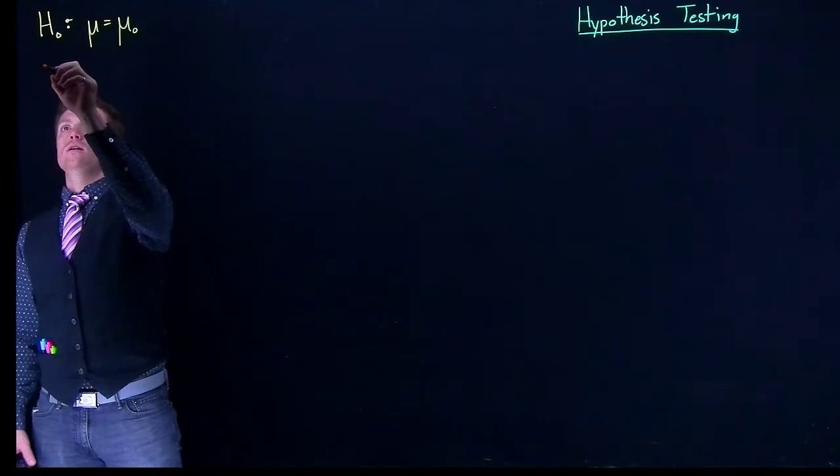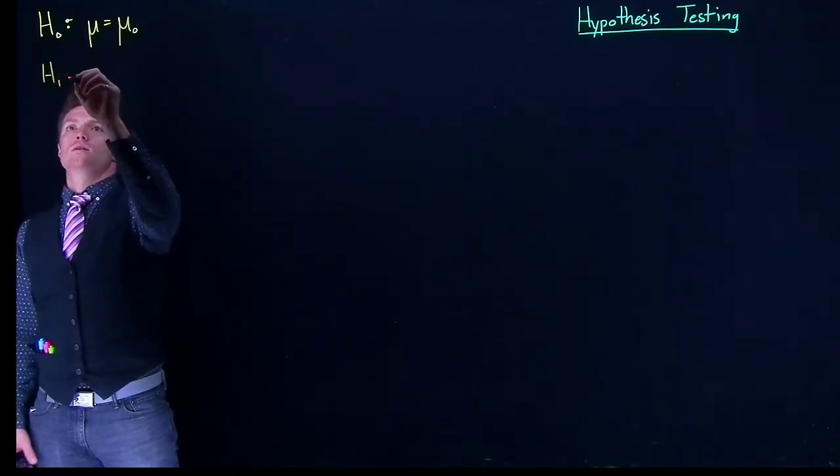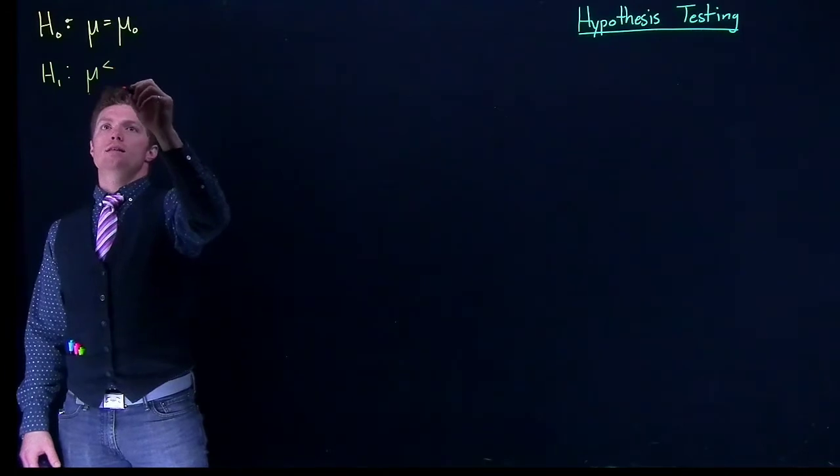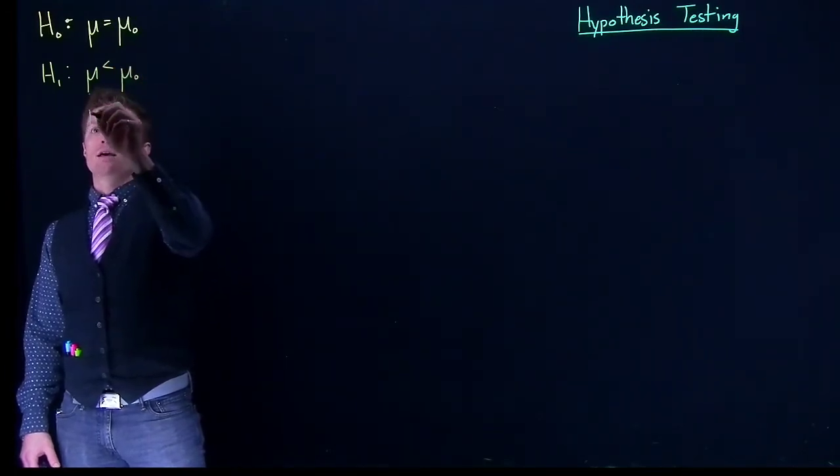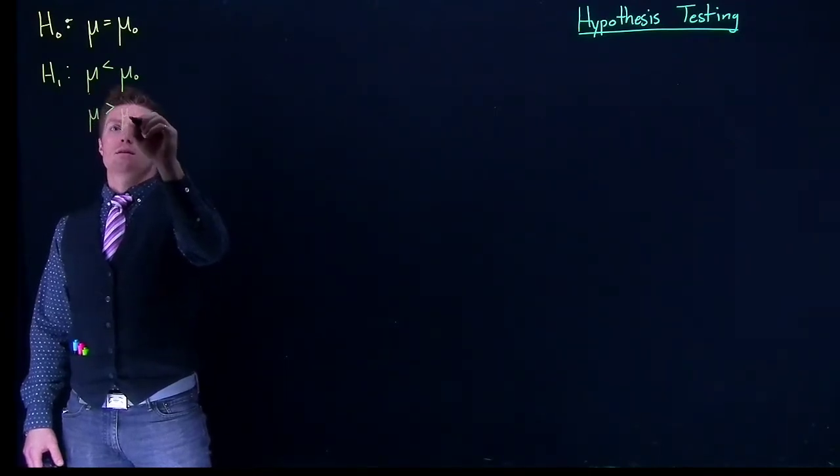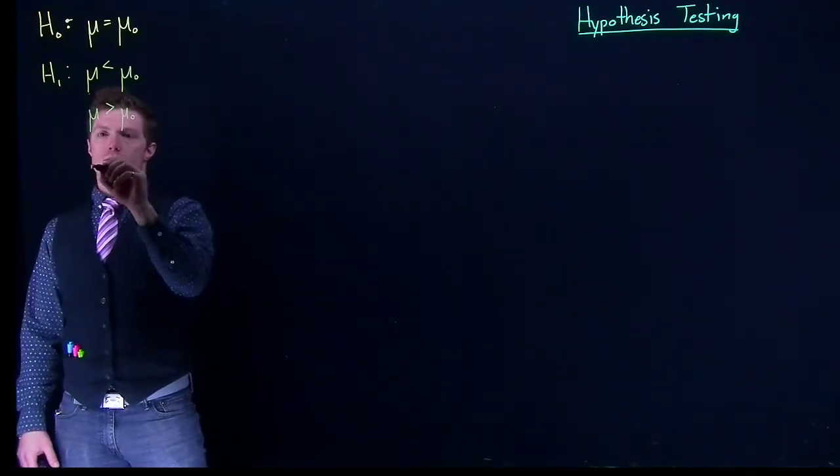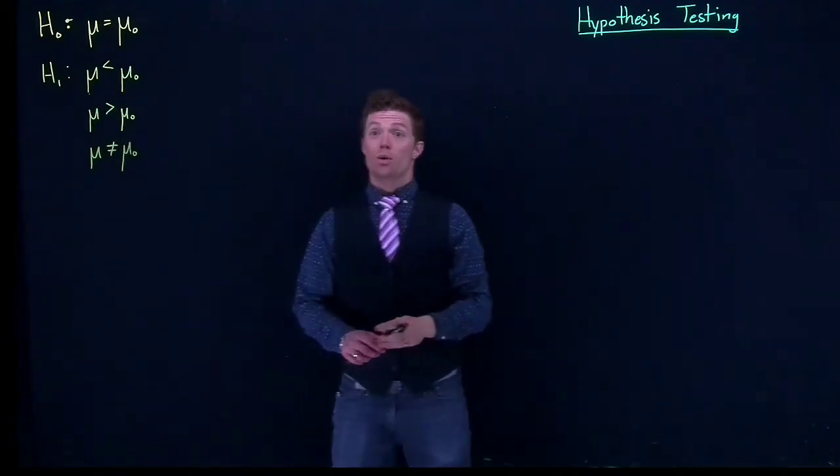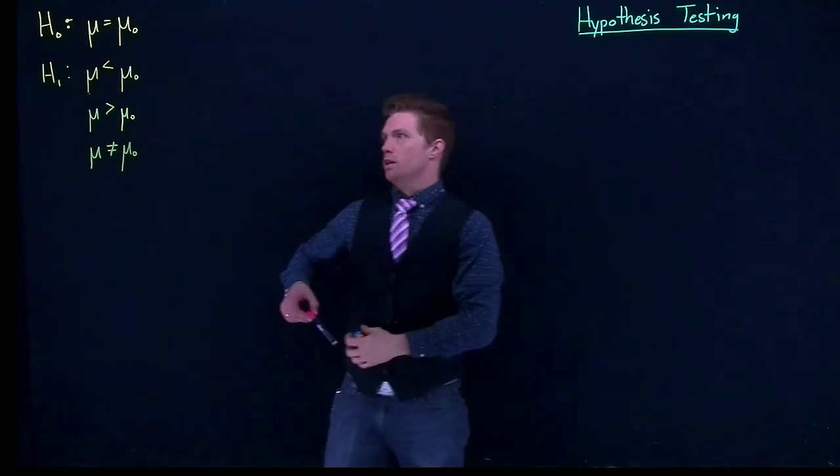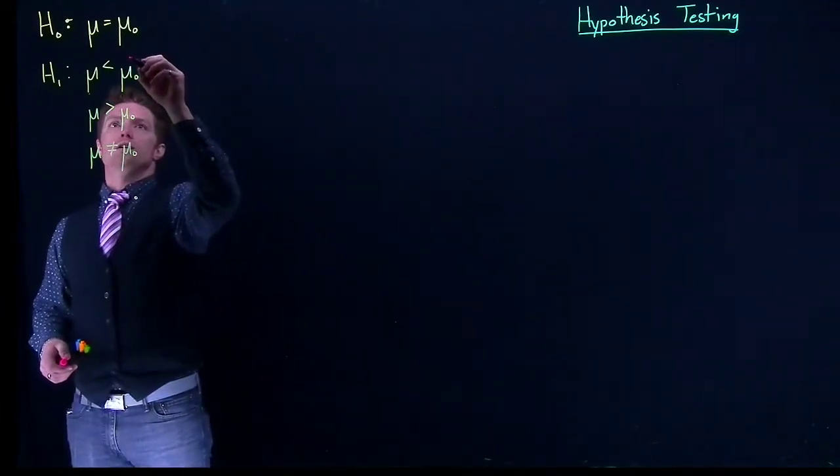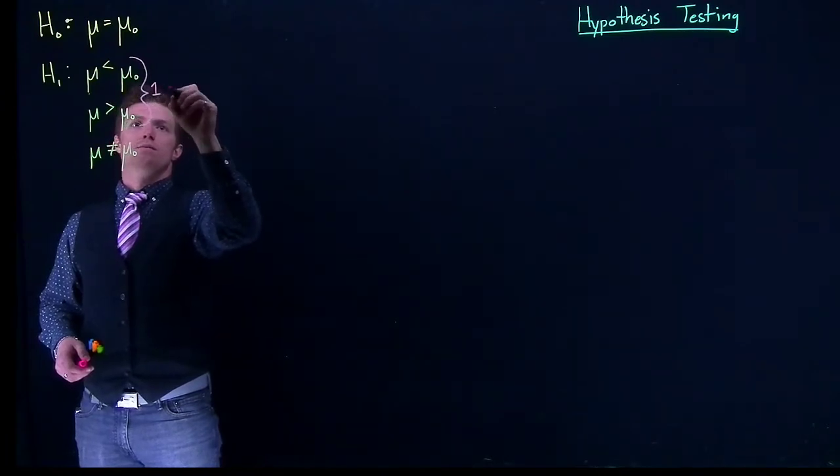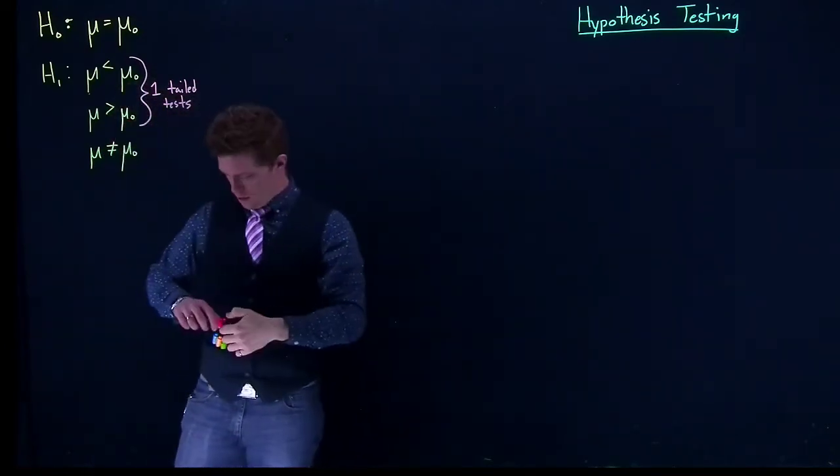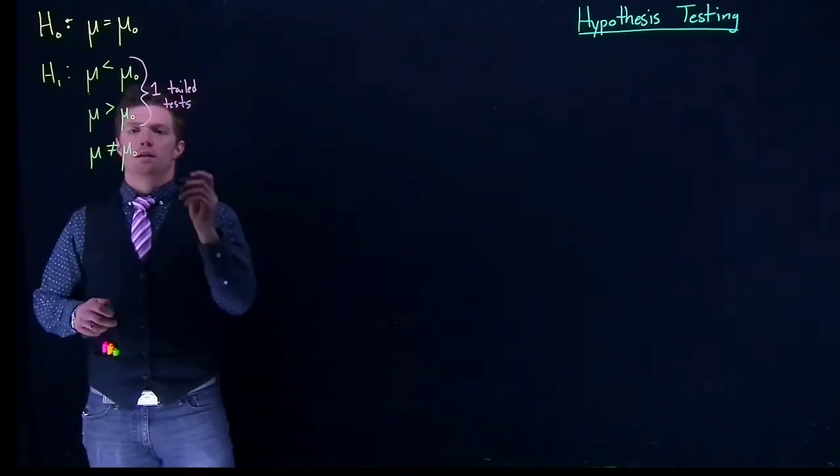And for the alternative hypothesis, we're actually going to have three separate ones, right? We could have mu being less than mu naught, we could have mu being greater than mu naught, and we can have mu being not equal to mu naught. We would only have one of those, but those are the three possibles. And remember, these are considered one-tailed tests, and the bottom one is our two-tailed test.